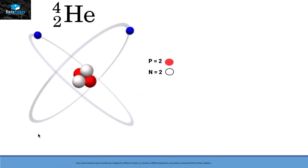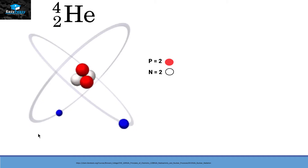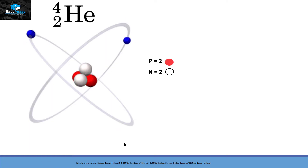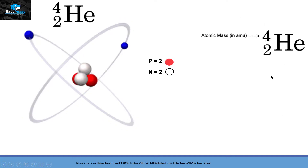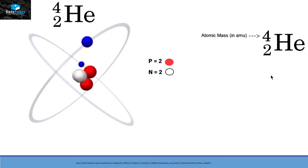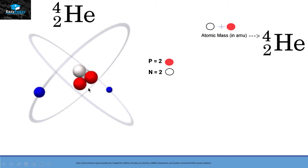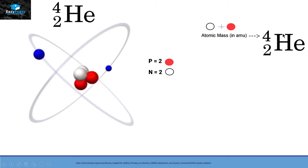Let's take an example of a real atom: Helium. Helium has two protons and two neutrons in the nucleus, and there are two electrons in blue that are revolving around it. The symbol of Helium is He. Beside it we see the number 4 and number 2. Number 4 is the atomic mass of Helium. Atomic mass is the total number of protons and neutrons — two neutrons plus two protons equals 4.